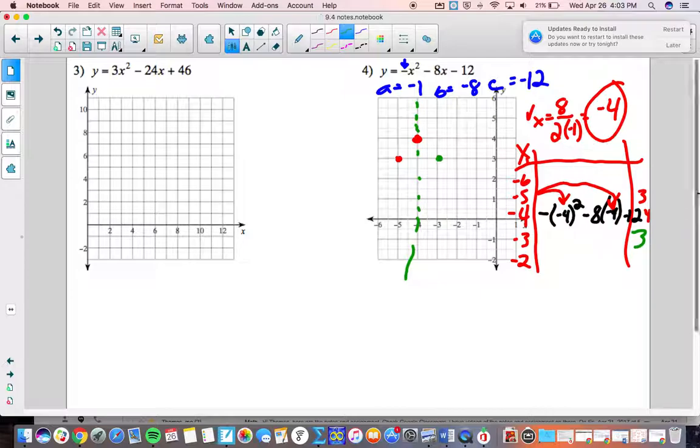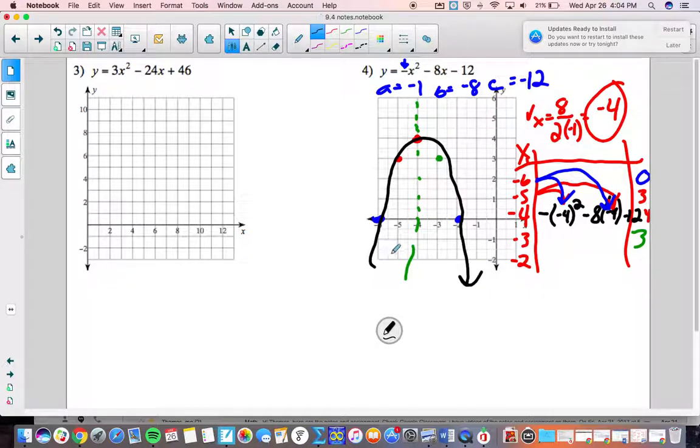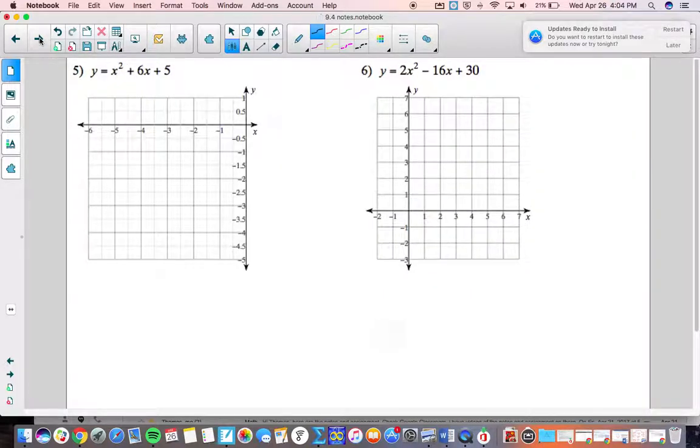And then last but not least substitute in negative 6 and that will get you 0. So what other point do I know? Reflected across the line of symmetry right there. So here is a rough sketch of your parabola, I have that dot there so I know what I was trying to do. Your parabola doesn't have to be perfect.